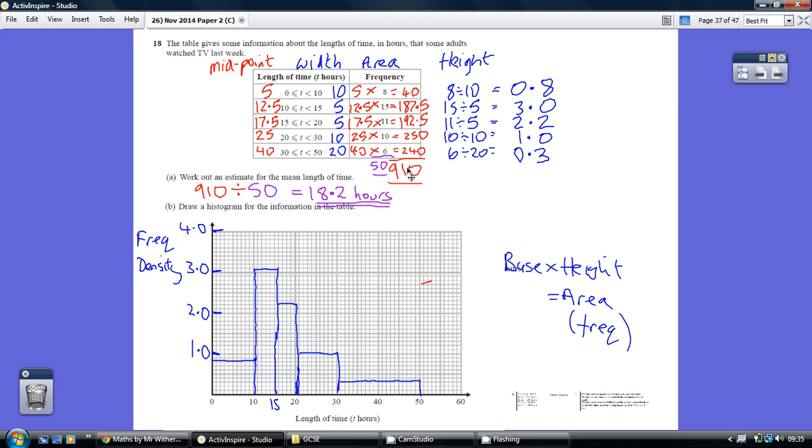That's how many hours. We don't know how many adults it is, but this frequency tells us the number of adults: 8 people, 15 people, 11 people. Add up that column, we get 50.